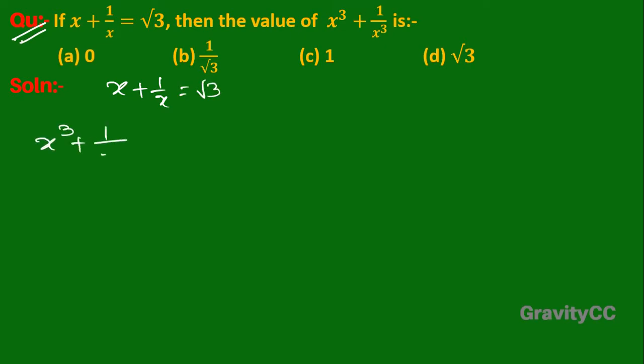x³ + 1/x³ is equal to (x + 1/x)³. Now we use the identity: a³ + b³ = (a + b)³ - 3ab(a + b).